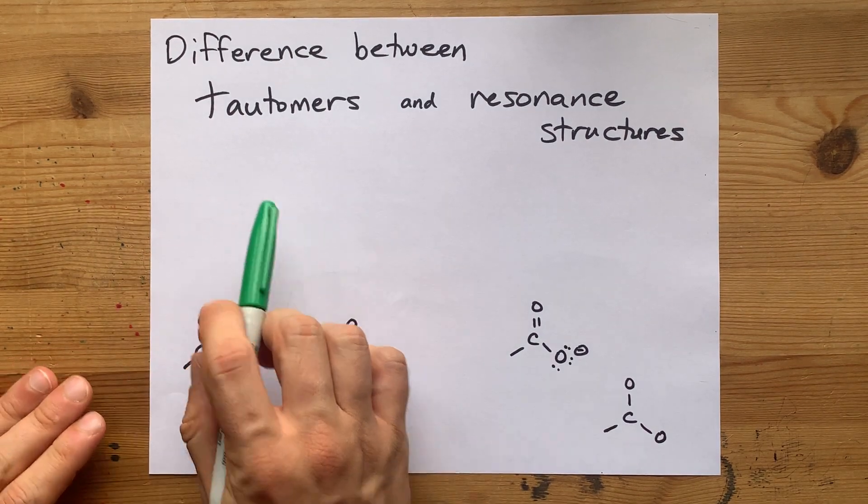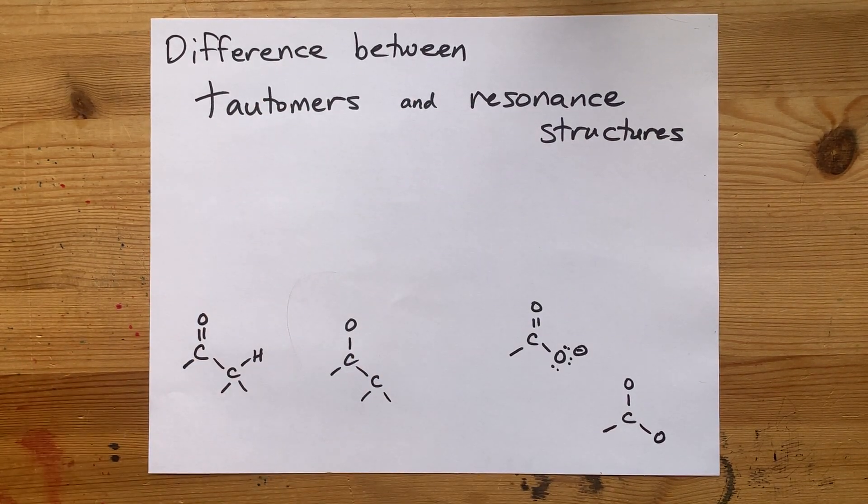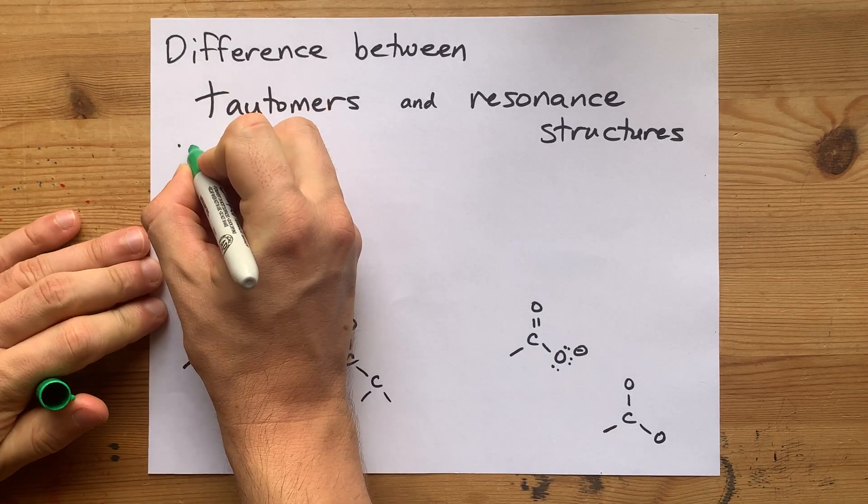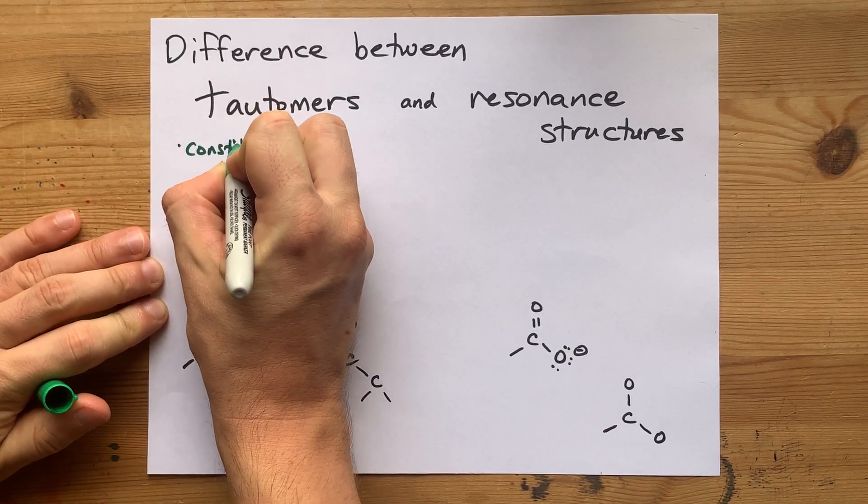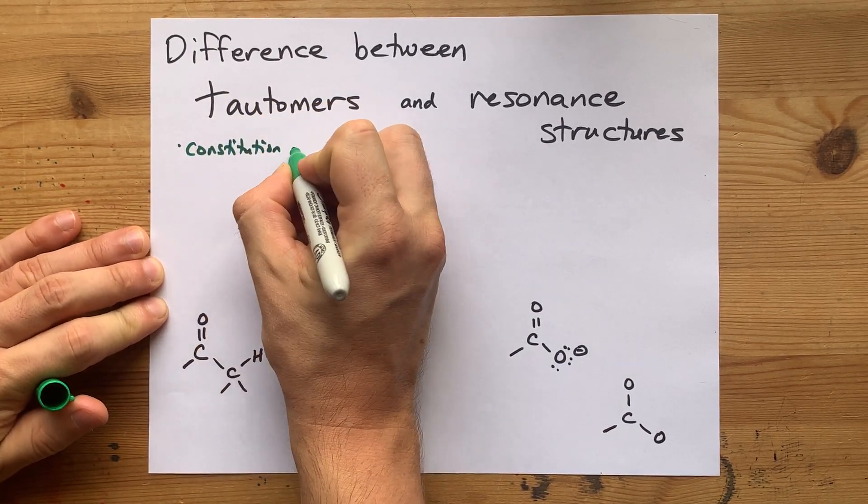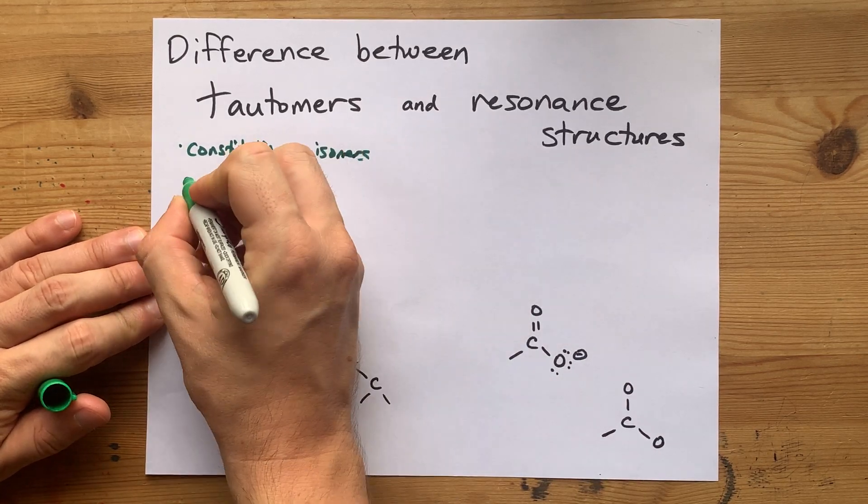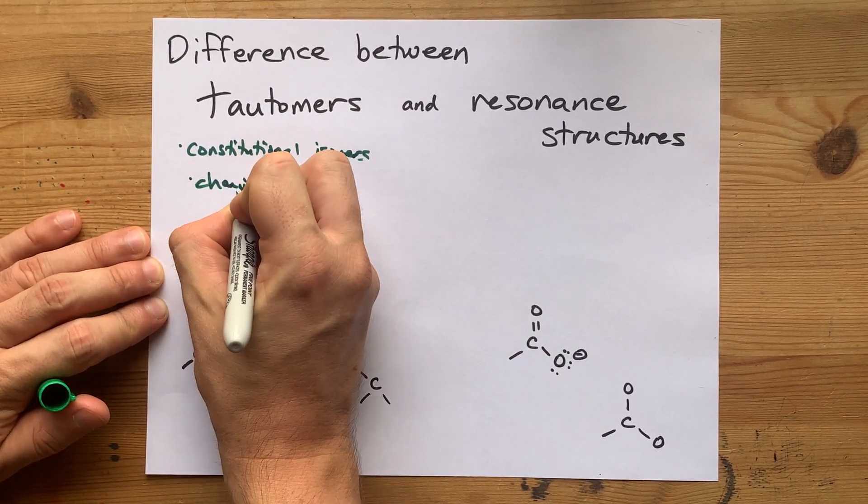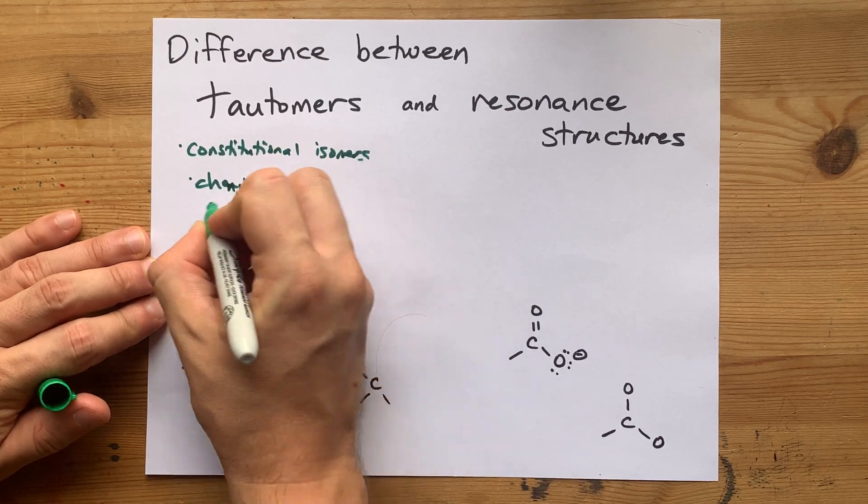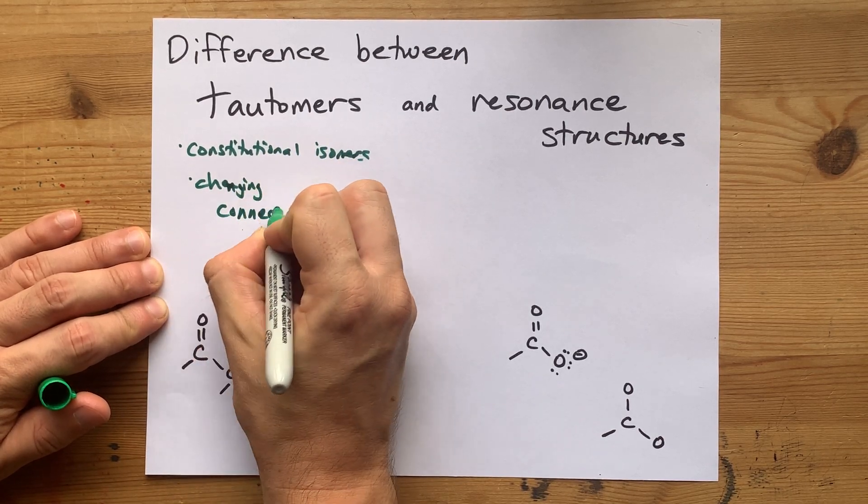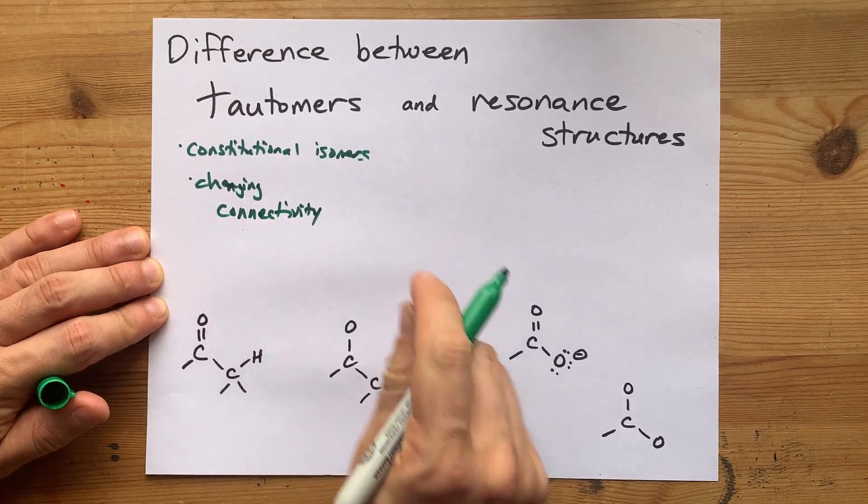The difference between tautomers and resonance structures is that tautomers are constitutional isomers. You are changing what is connected to what. I'm going to write that slowly, changing the connectivity between the atoms.